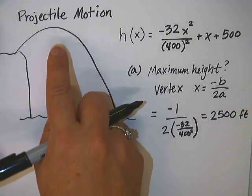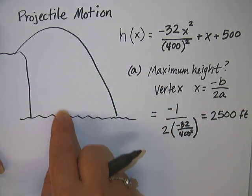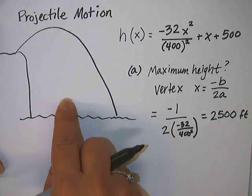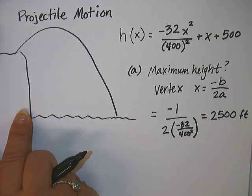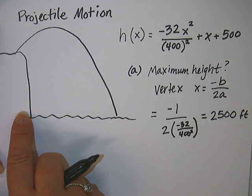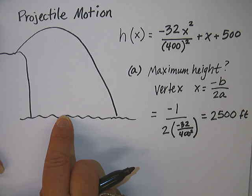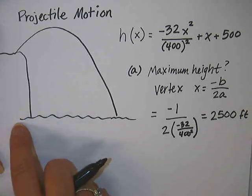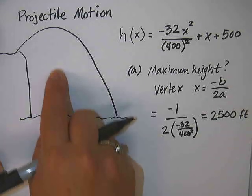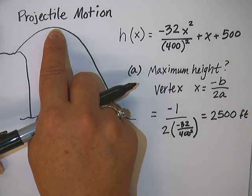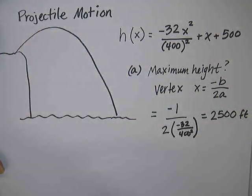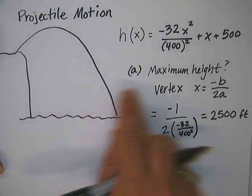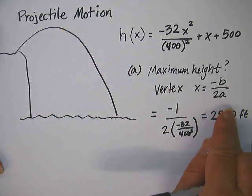Okay, now is that the maximum height? No, that is the x value where the maximum height occurs. So assuming that the projectile is launched when x equals 0, then 2,500 feet later, across this water, the projectile has reached its maximum height. So that's where Jack is at his highest point.